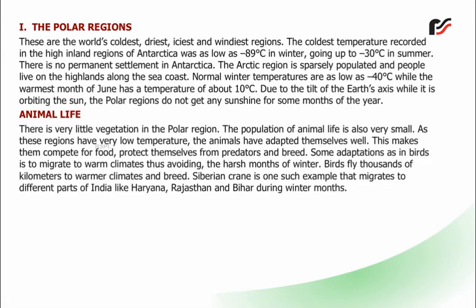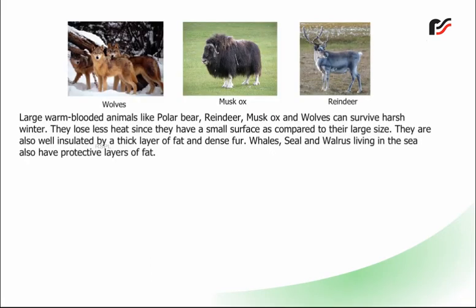There is very little vegetation in the polar region, and the population of animal life is also very small. As these regions have very low temperatures, animals have adapted themselves well to compete for food, protect themselves from predators, and breed. Some adaptation in birds is to migrate to warm climates, avoiding the harsh months of winter — birds fly thousands of kilometres to warmer climates to breed. Siberian cranes are one such example, migrating to different parts of India like Haryana, Rajasthan, and Bihar during winter months. Large warm-blooded animals like polar bears, reindeer, musk ox, and wolves can survive harsh winters. They lose less heat since they have a small surface area compared to their large size, and are well insulated by a thick layer of fat and dense fur. Whales, seals, and walruses living in the sea also have protective layers of fat.